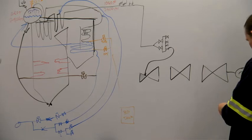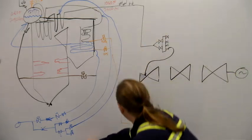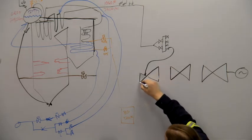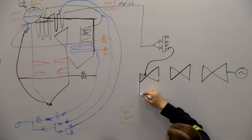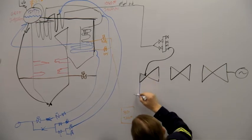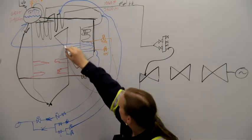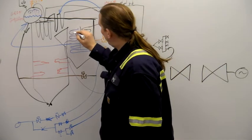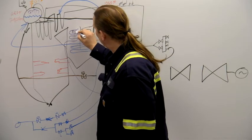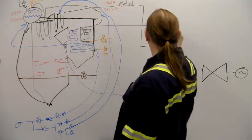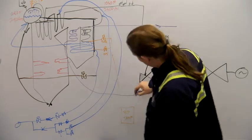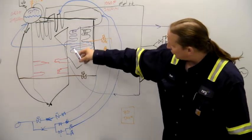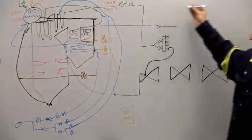So we go through seven stages of the HP turbine and then we come out the bottom. The exhaust from the HP turbine goes back into the boiler and gets heated up. This is called the reheat section. Before it goes back to the boiler it's called cold reheat, when it comes out of the boiler it's called hot reheat.